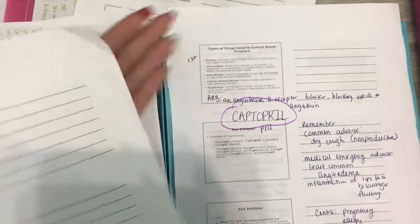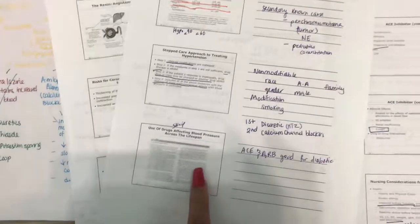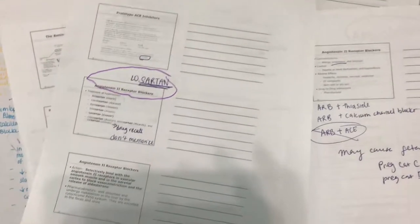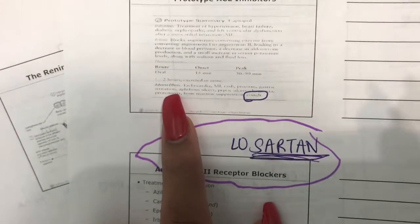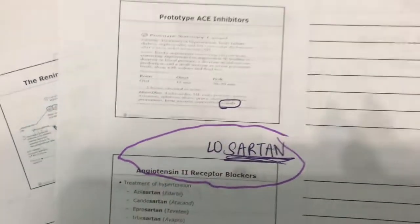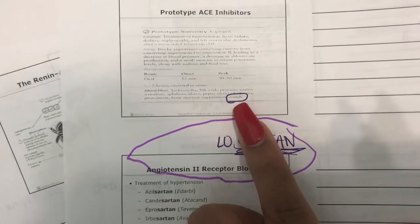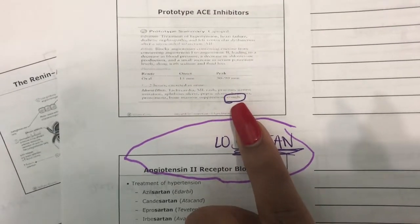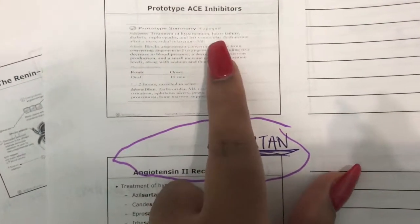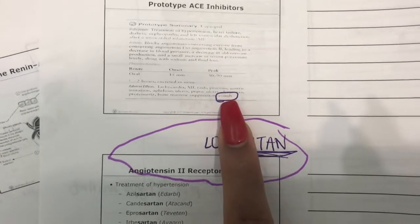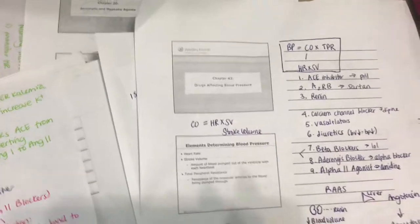When you go through your slides, the teacher would most likely have the boxes from the textbook that list a lot of different adverse effects, but you don't need to know all of them. Just know the important ones that your teacher stressed. For example, Captopril, which is an ACE inhibitor — the teacher stressed that it has an adverse effect of cough. So when you're making your map, don't write all of those adverse effects.